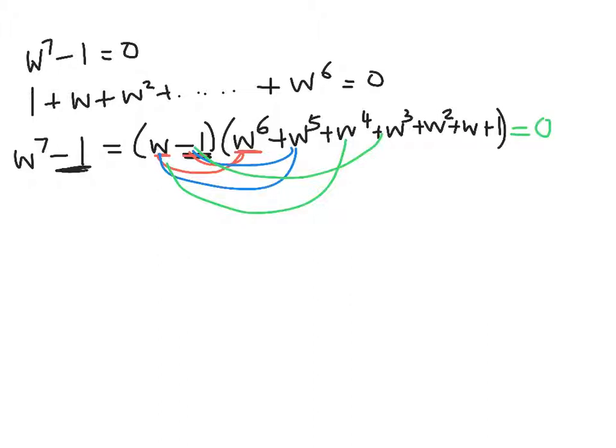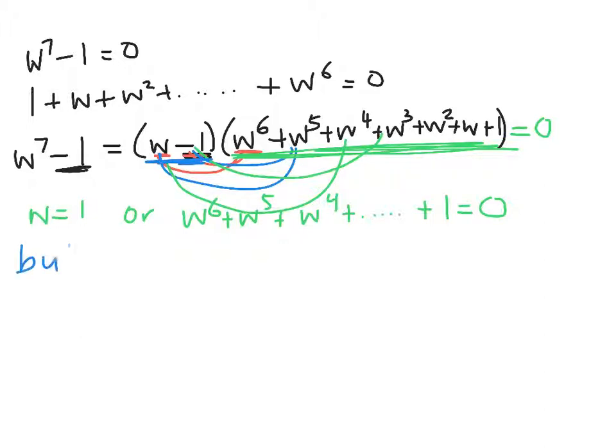And that tells me that either w = 1 or w⁶ + w⁵ + w⁴ + w³ + w² + w + 1 = 0. Right, so either this is 0 or this is 0. But we know that w is not equal to 1 because w = cis(2π/7).